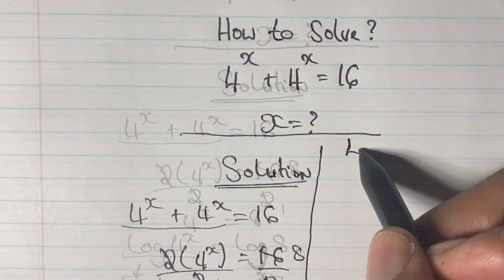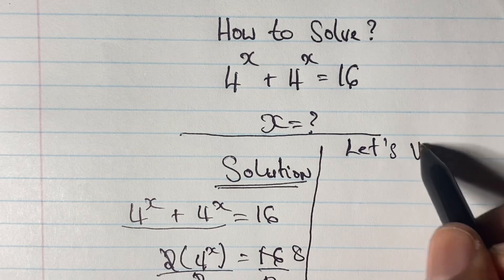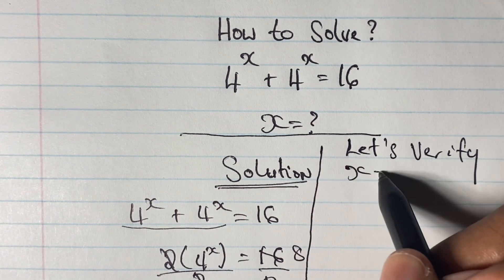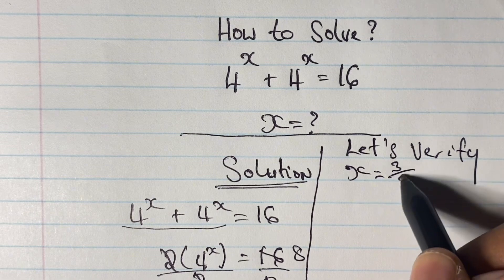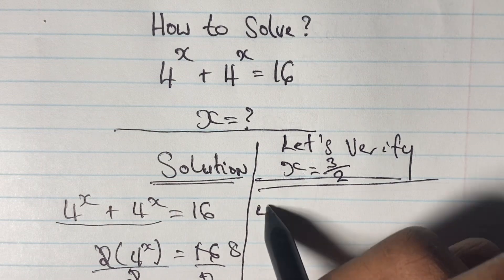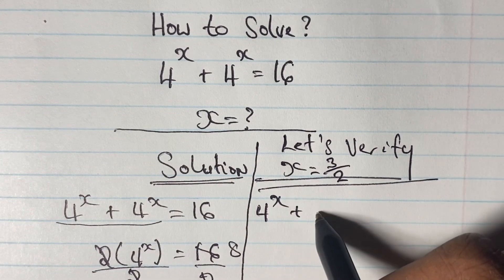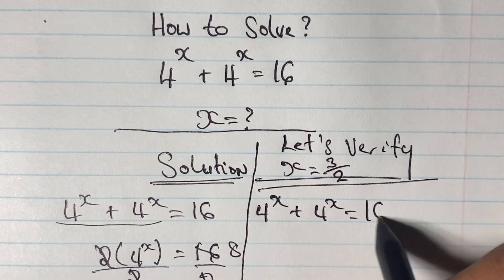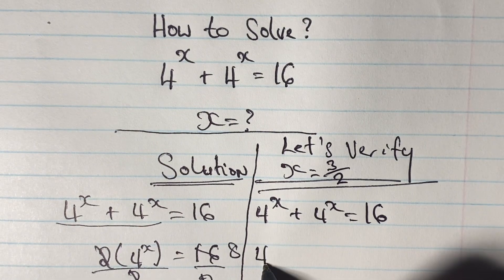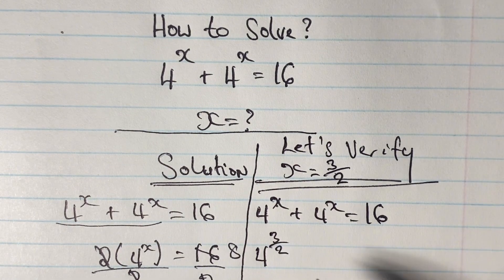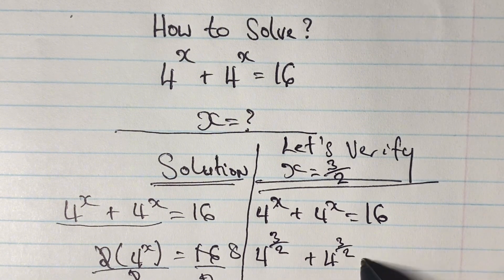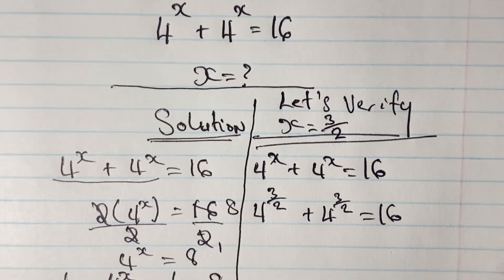Now let's see if we can go ahead and verify our answer for x. We just said that x is equal to 3 over 2. So we are going to rewrite our equation, which is 4^x + 4^x is equal to 16, and use our answer for x to see if it will give us 16. So we have 4 to the power of 3 halves plus 4 to the power of 3 halves is equal to 16.